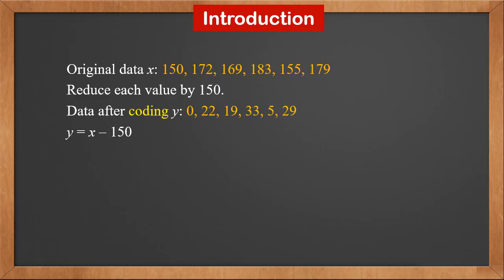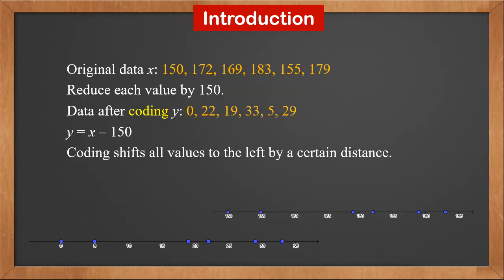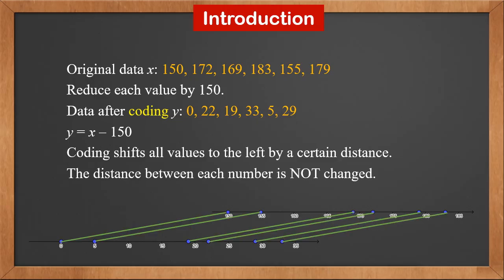We know y is x minus 150. Let's put all values on the axis. We see that coding shifts all values to the left by a certain distance. However, the distance between each number is not changed. If you connect corresponding x and y values, you can see that all these lines are parallel.